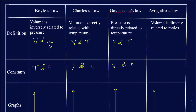The last simple law is Avogadro's Law. In Avogadro's Law, volume is directly related to moles while keeping temperature and pressure constant. When you put helium into a balloon, the amount of helium is measured in moles — as moles increase, volume also increases. So those are your four simple laws; make sure you know their definitions and the variables involved.